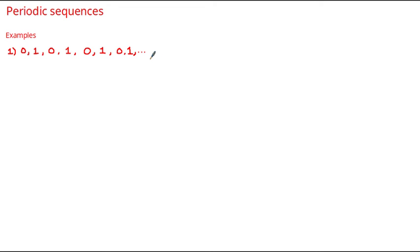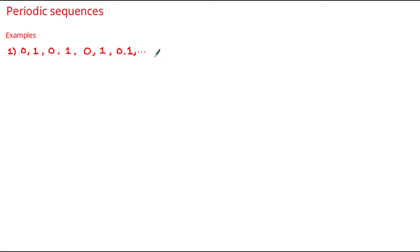Now we're often interested in something called the order or the period of a periodic sequence, and this is a value which tells you the number of terms in the sequence before the sequence repeats itself. Here we see that we have 0, 1, and then the sequence repeats itself. So we have two values before the sequence repeats, and therefore the order of this sequence is equal to 2.